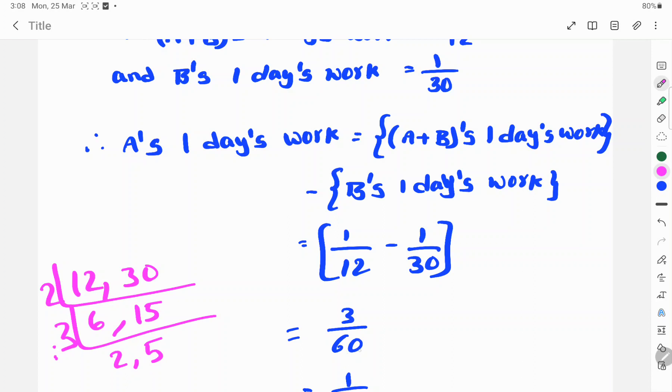60 divided by 12 is 5, so 5 times 1 equals 5. 60 divided by 30 is 2. So we have 5 by 60 minus 2 by 60, which equals 3 by 60.